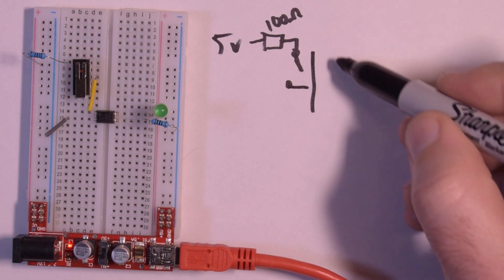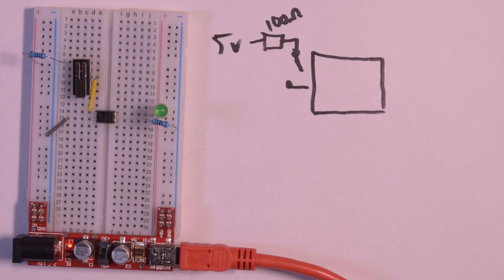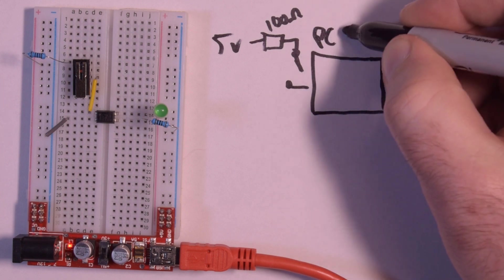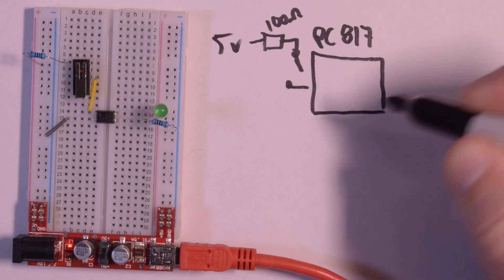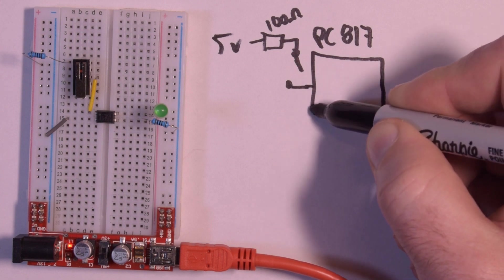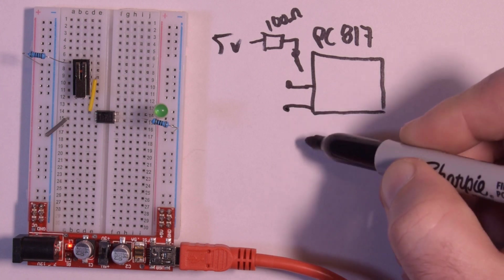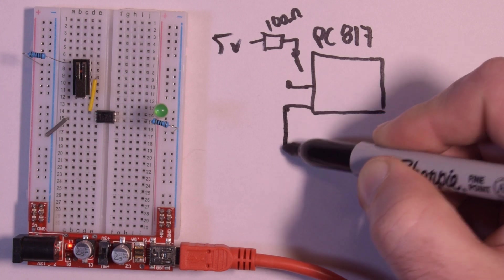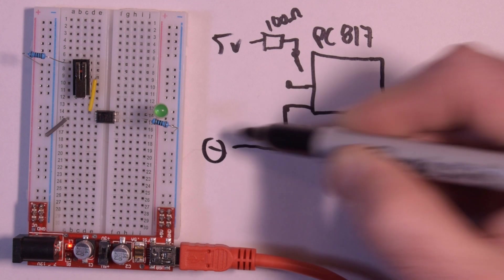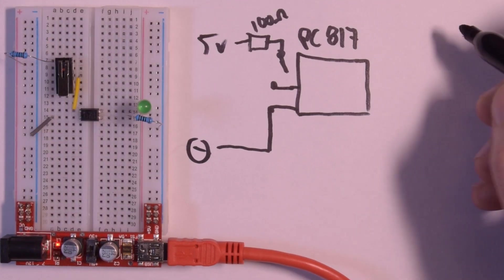And then it'll come to our magic box here, which is our PC817. So into there and then out of here, and then continue on its merry way down to ground.